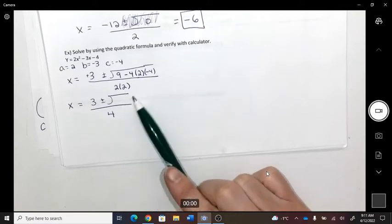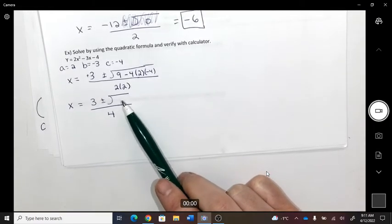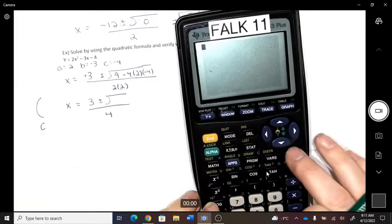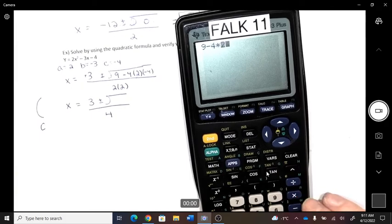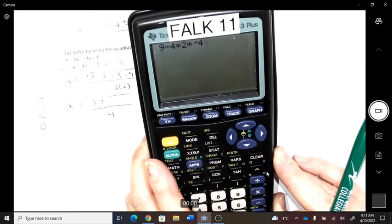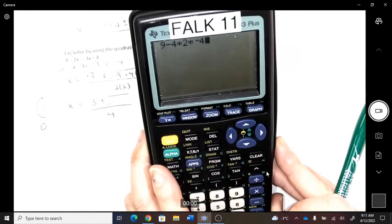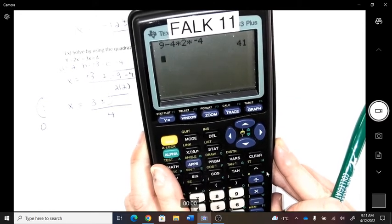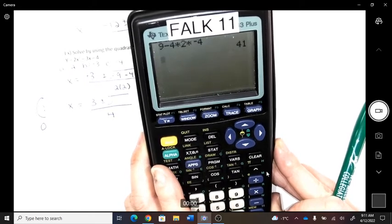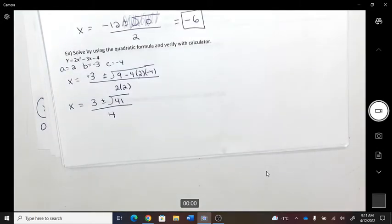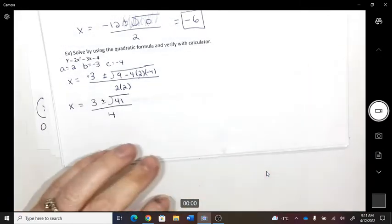Okay, so I'm going to make the bottom 4 already. So we're going to work on this root. 9 subtract 4 times 2 times negative 4. This is my typing. 9 subtract 4 times 2 times negative 4. And I get 41. That was good on the way we typed it? Okay, so the square root of 41 is not something that's perfect. So we're going to leave it.